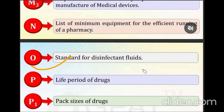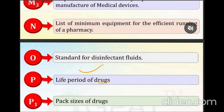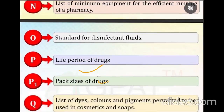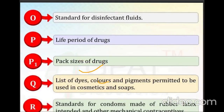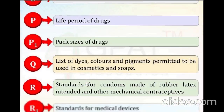Next is Schedule P. Schedule P means the life period of drugs. Then Schedule P1, which means pack size of drugs.